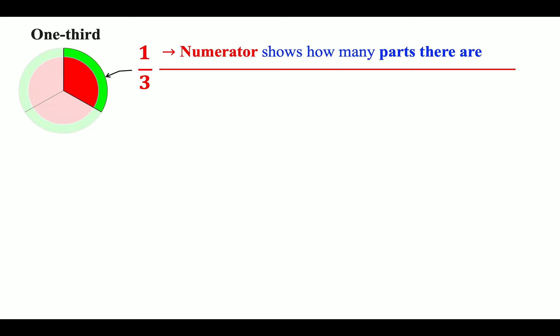Numerator shows how many parts there are. Denominator shows how many parts something has been divided into.